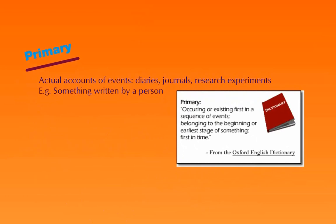A primary source is an actual account of events — a diary, a journal where somebody has been keeping track of events, a research experiment where the person actually performed the experiment and is telling you what they did. Something written by a person: if you're researching an author, something written by Maya Angelou is the primary account of her thoughts. The Oxford English Dictionary defines primary as occurring or existing first in a sequence of events, belonging to the beginning or earliest stages of something. Historical documents are great examples — the original documentation of something.